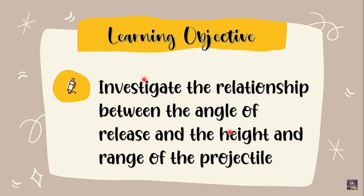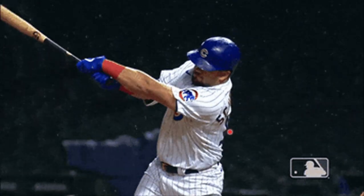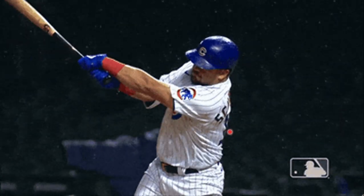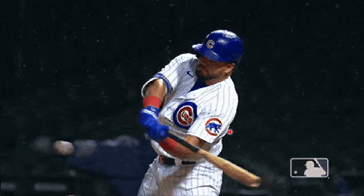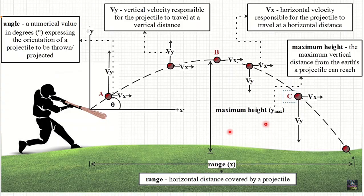To formally begin, I have here a GIF. Let's see and describe the motion of the baseball as this person hits it with a bat. If we analyze it using this chart or graph, this is the movement of the baseball once this man hits it with the baseball bat. It follows a parabolic path.